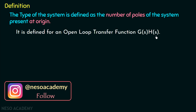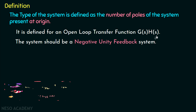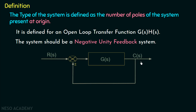The type of system is not defined for a closed loop transfer function. The system should be a negative unity feedback system. In a unity feedback system, the value of feedback gain is equal to 1, and that's why the output is directly connected with the input junction. We have two types of feedback: positive feedback and negative feedback, but the type of system is only defined for a negative unity feedback system.